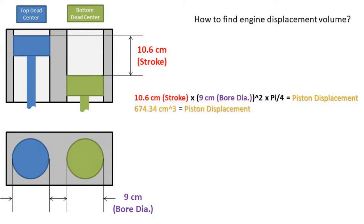So to find the piston displacement, we need to find the volume of the stroke of the piston. To complete this, we can take the area of the cylinder bore, in this case 9 cm squared times pi over 4 and multiply it by the stroke length of 10.6 cm. We get that each piston has a total displacement of 674.34 cm cubed.